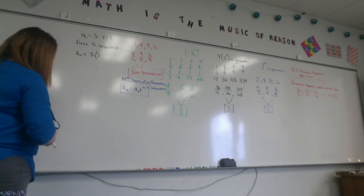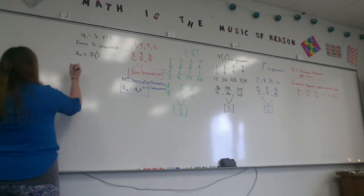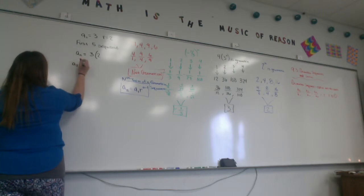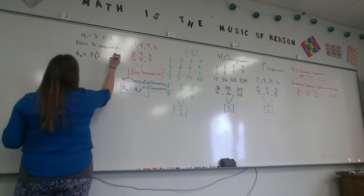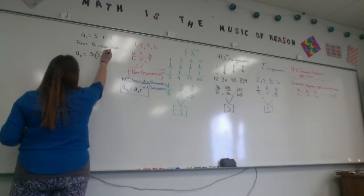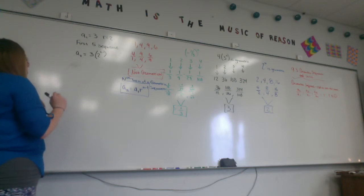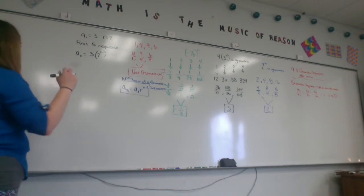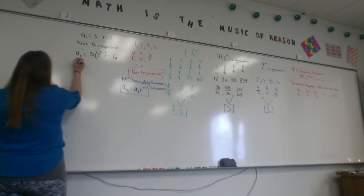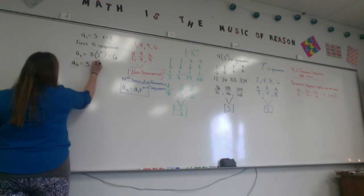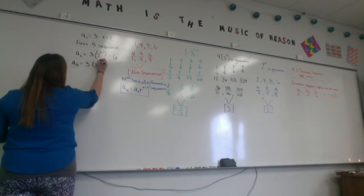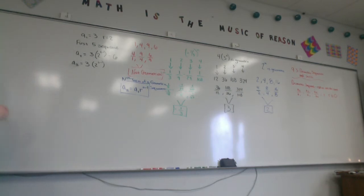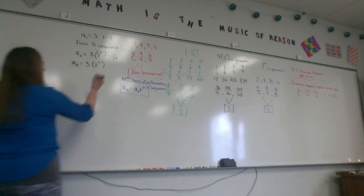If I plug in a 2 to figure out what term 2 is, because I have term 1, I need a2. So, if I need a2, then I have n minus 1. So, I have 2 minus 1 here for its power. What's 2 minus 1? 1. So, 2 to the first power is 2, and 2 times 3 equals 6. If I want to do a3, I do the same thing. 3 times 2 to the 3 minus 1. 3 minus 1 is 2. 2 squared is 4. 4 times 3 is 12.